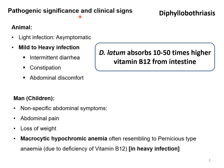Regarding pathogenic significance and clinical signs during diphyllobothriasis, one important reason for studying this parasite is that it causes vitamin B12 deficiency in men and animals. In light infections it is asymptomatic, but in mild to heavy infections, clinical signs such as intermittent diarrhea, constipation, and abdominal signs can be found. In humans the signs are also non-specific, including abdominal pain and loss of weight, but one important clinical sign is vitamin B12 deficiency, which presents as macrocytic hyperchromic anemia resembling pernicious-type anemia.